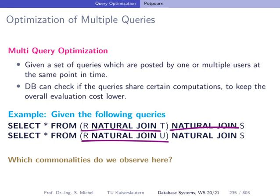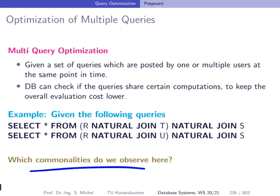The idea behind optimization of multiple queries is to see commonalities between the queries in order to make joint execution more efficient. In the simplest case, two queries are accessing one relation, and instead of reading that relation twice we can share the scan so both queries benefit. Looking at our two queries, we see relation R is used in both, and S appears in both. T and U are obviously not the same, but S and R are read in both queries.